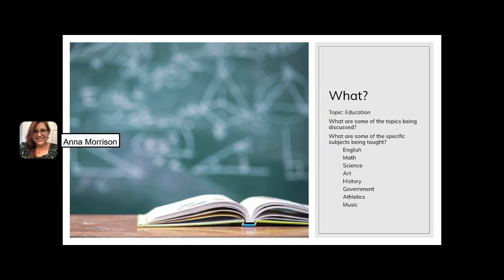You should have a very nice long list of 'who' for your topic. Now we move on to our next question: What? Ask yourself what are some of the topics being discussed regarding your topic. If I'm looking at education, I'd think about the different subjects being taught — English, math, science, art, history, government, athletics, music — there's a very long list. If you wanted to Google your topic or look at Wikipedia just to see what some of the trending subjects are, you could do that, but you would never use those sources in your essay. They're just for brainstorming right now.